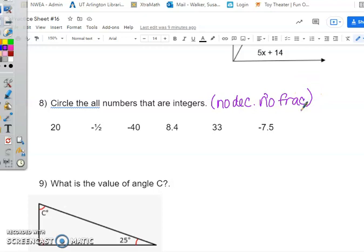I want you to cross out all the decimals and fractions. Every number you have left is an integer. Decimals and fractions start once we get to rational.